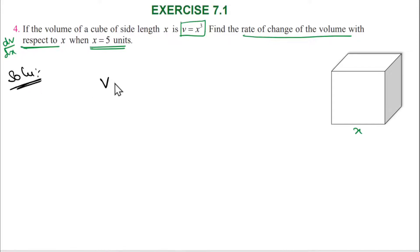So V is equal to x cube. Rate of change of volume with respect to x means differentiate V with respect to x. Then V is x cube, differentiate DV by DX. X cube, decrease the power, then 3x square.